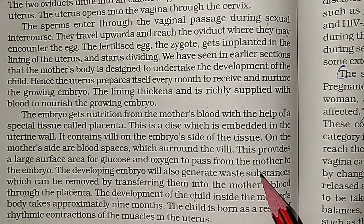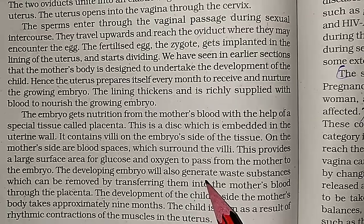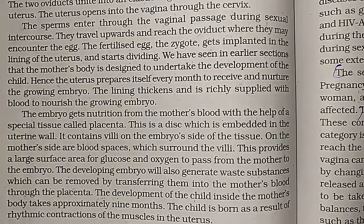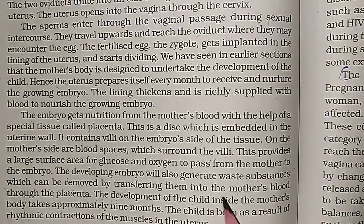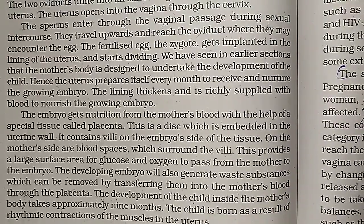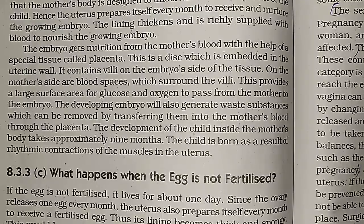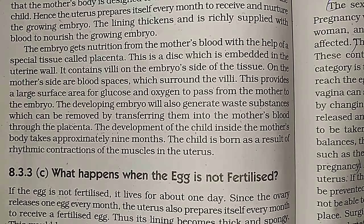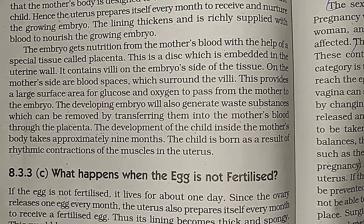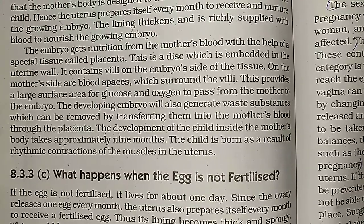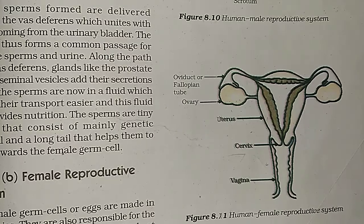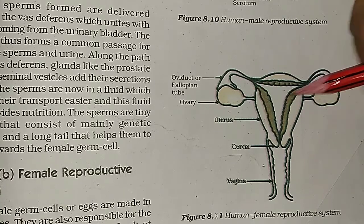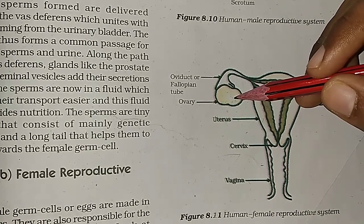The developing embryo also generates waste substances, which can be removed by transferring them into the mother's blood through the placenta. The development of the child inside the mother's body takes approximately 9 months. The child is born as a result of rhythmic contraction of muscles in the uterus.